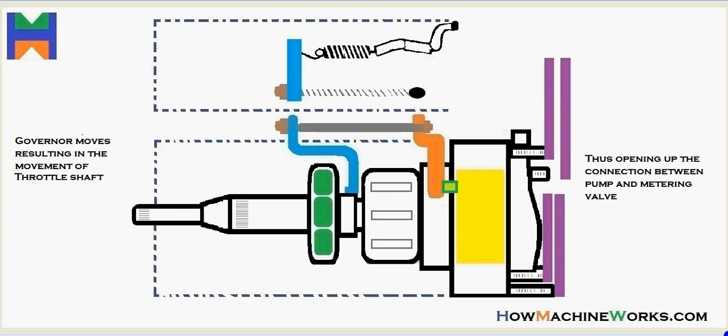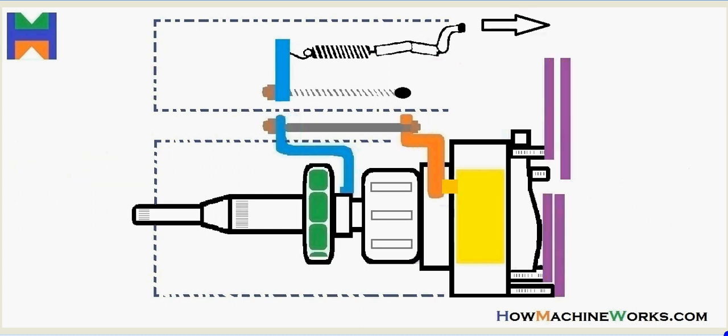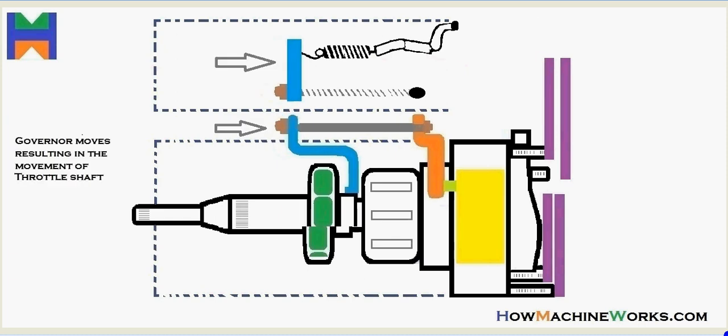Thus the fuel gets towards the injectors. So the same way, when we release the accelerator pedal, the fuel flow reduces also. So these are the two states how the governor actually controls the fuel flow towards the engine.